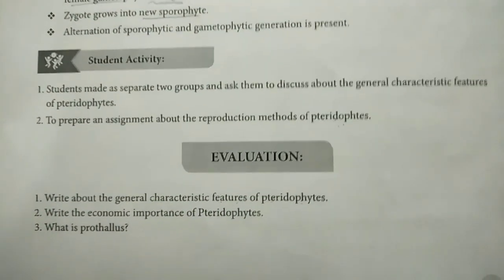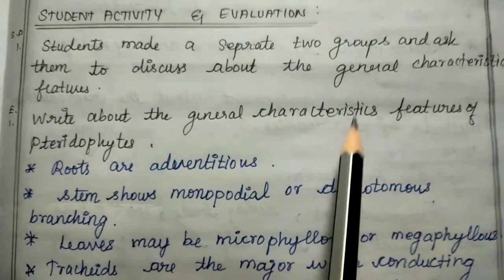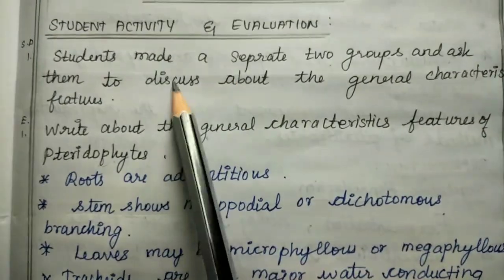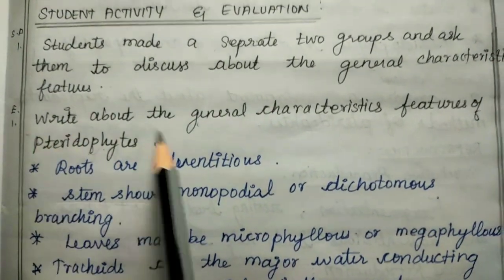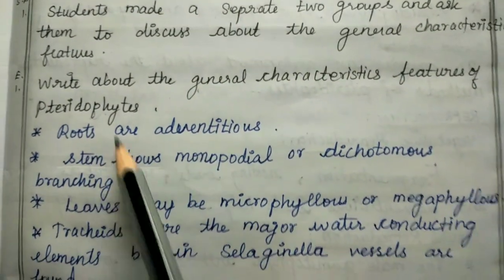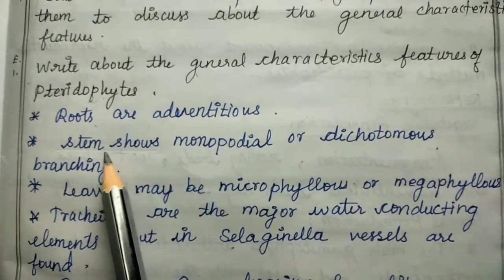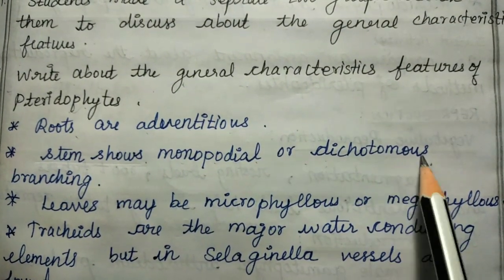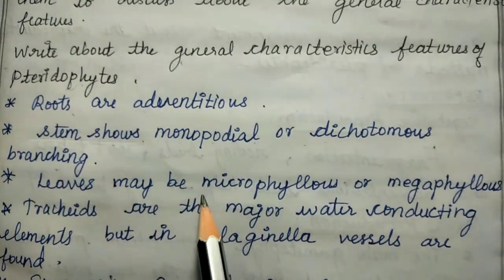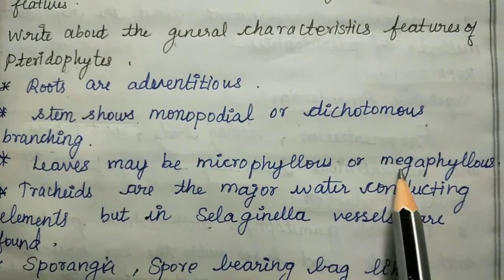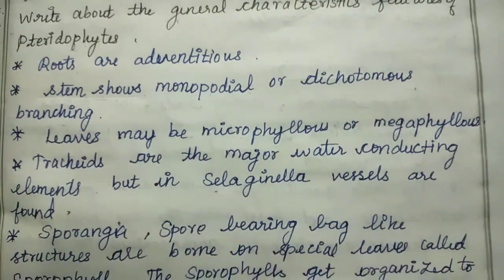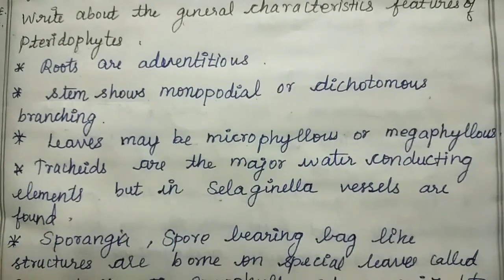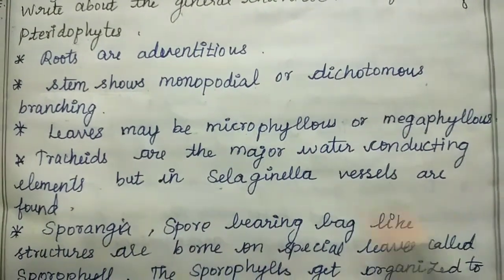Evaluation answer: characteristic features of pteridophytes. The root is adventitious. The stem shows monopolodial or dichotomous branching. Leaves may be microphyllous or megaphyllous. Pteridophytes are the major water conduction element, but in Selaginella vessels are found.